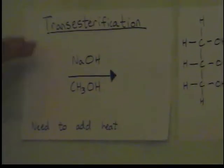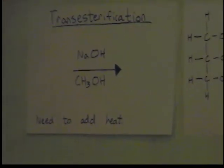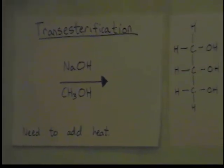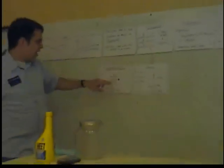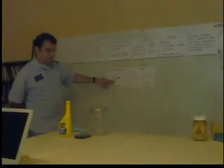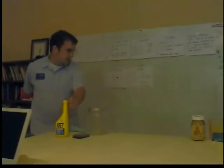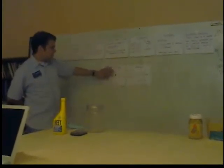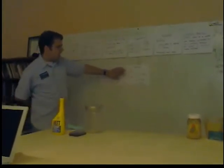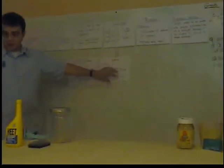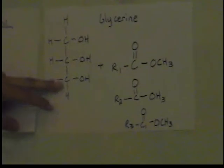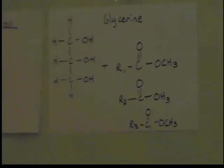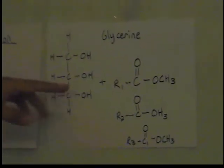Transesterification is a long word, but what it means is basically taking this triglyceride right here and converting it by adding sodium hydroxide, the lye, and the methanol. Adding those together in the process of transesterification, we create two things from that reaction. We create glycerin, which is right here, and glycerin can be separated from the biodiesel reaction as you can see when I do it.